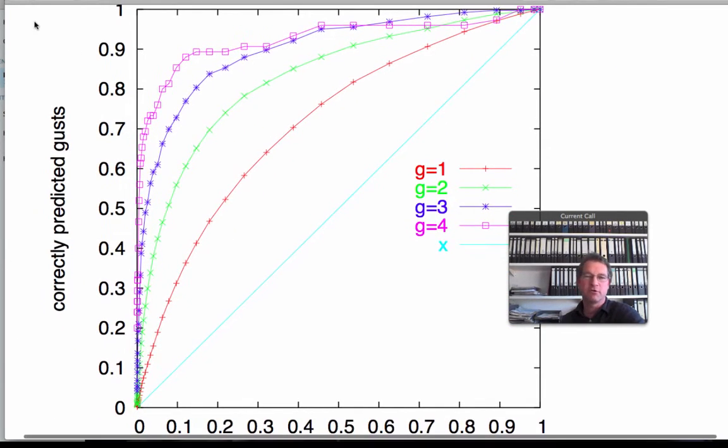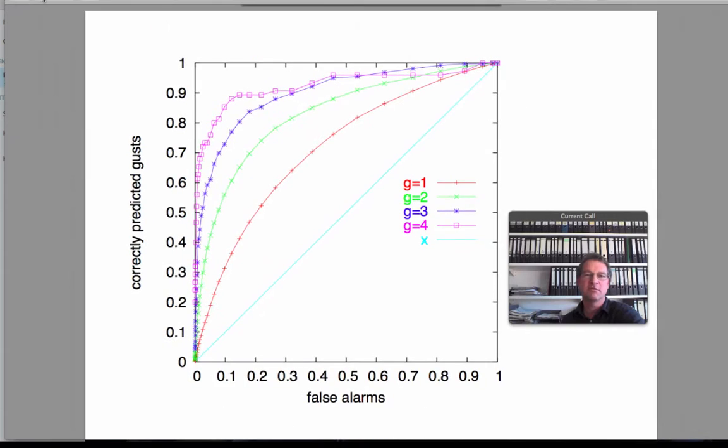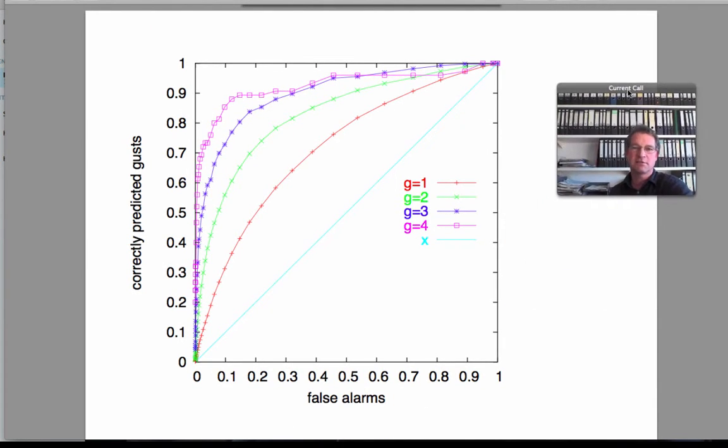There we see some curves which are called the ROC curves and on the x-axis we report the false alarm rate. False alarm rate means that the absolute number of false alarms issued by our prediction system is normalized to the number of non-events in our time series. So it ranges from 0 to 1.